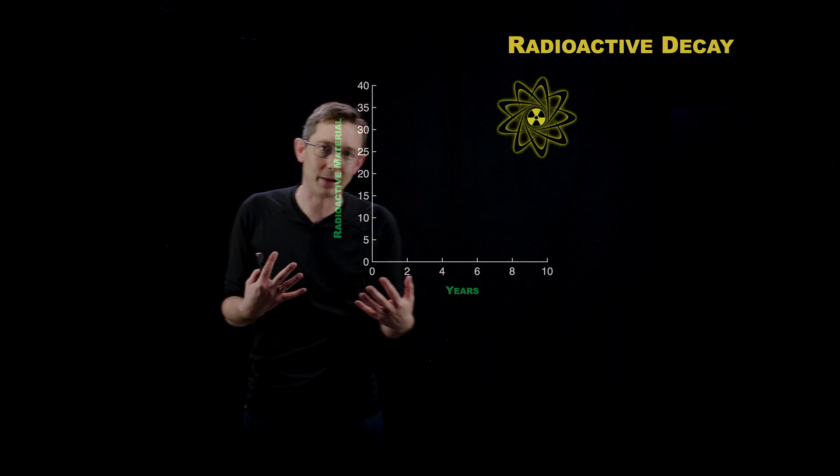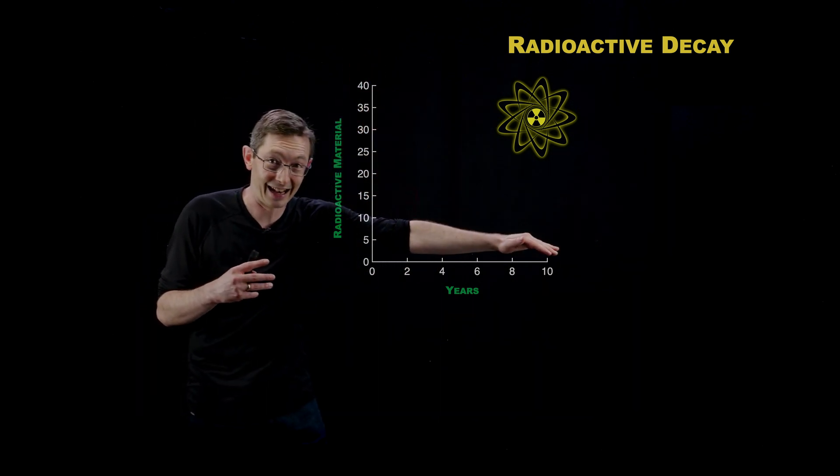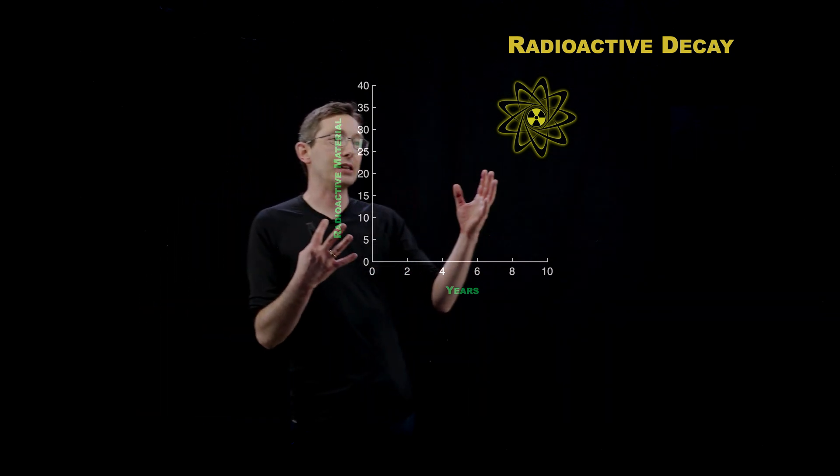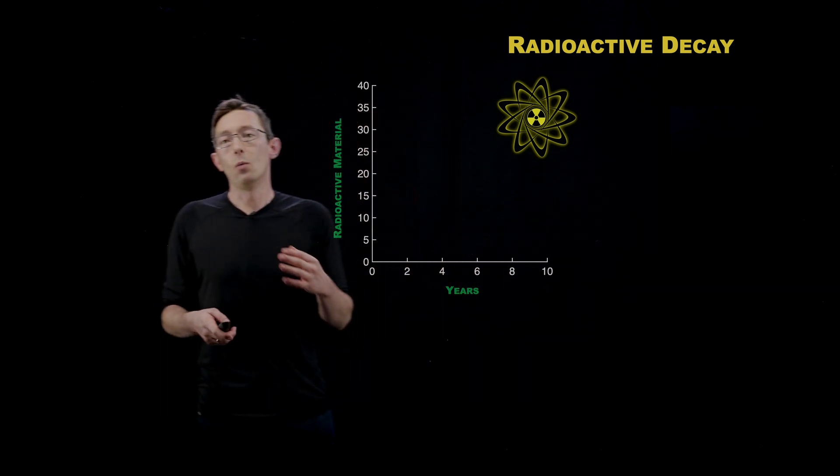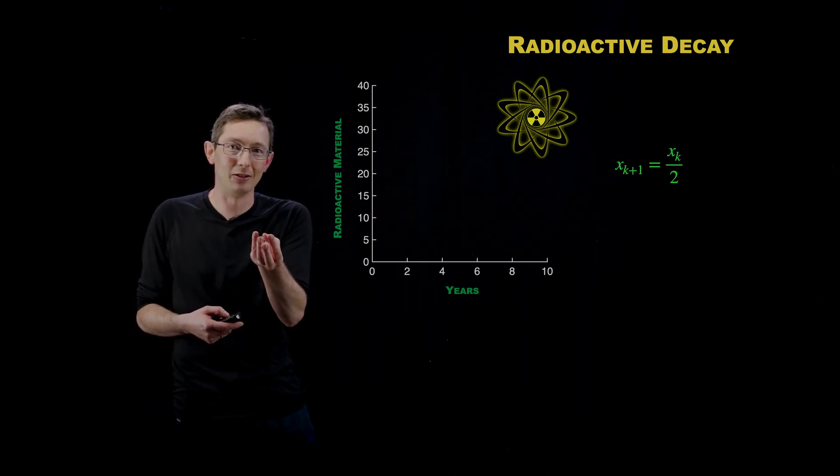Another example that I like to talk about is things don't just grow exponentially. They can also decay exponentially. So this is a case of radioactive decay where if you had a radioactive element, if you had some mass of plutonium or uranium or whatever,